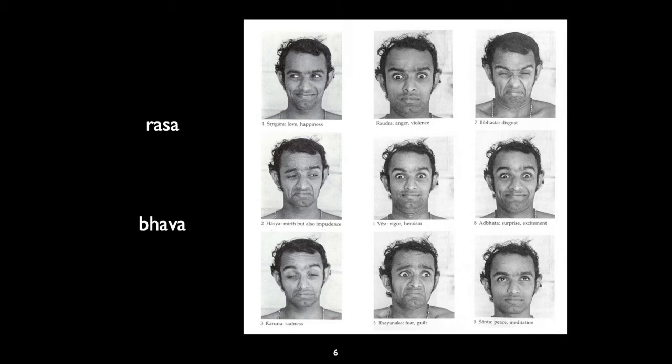Some of the most common Bhavas would be anger, disgust, mirth, heroism, and sadness — all basic human emotions. It's interesting how Sanskrit theater ties into these fundamental human experiences in communicating messages about the gods and heroic epics. Actors trained to communicate the idea of Rasa through their Bhavas.